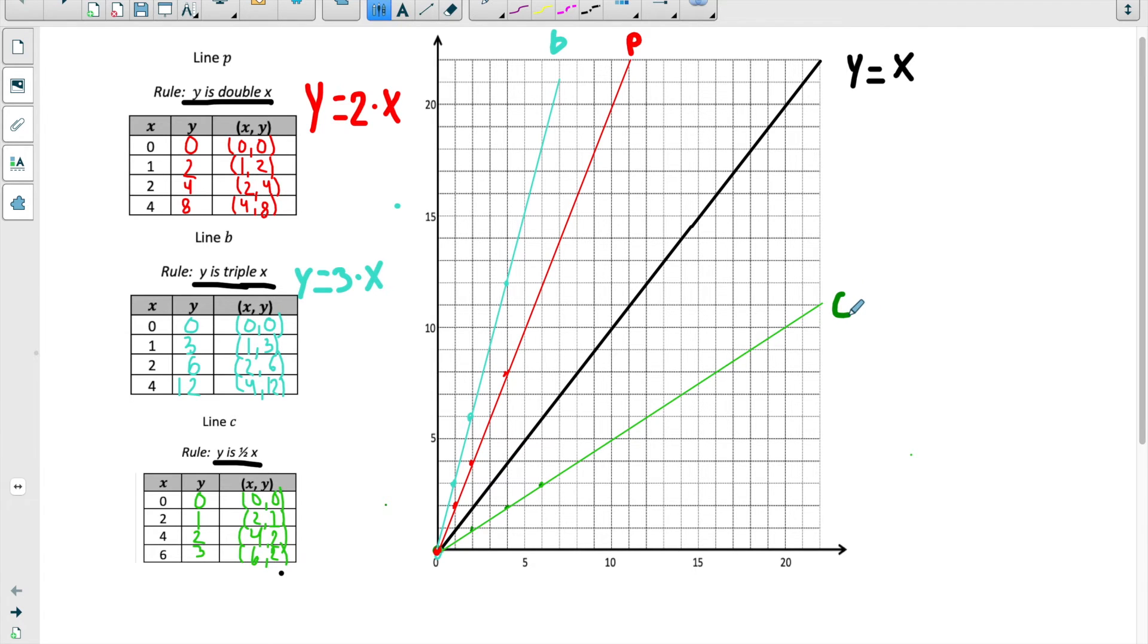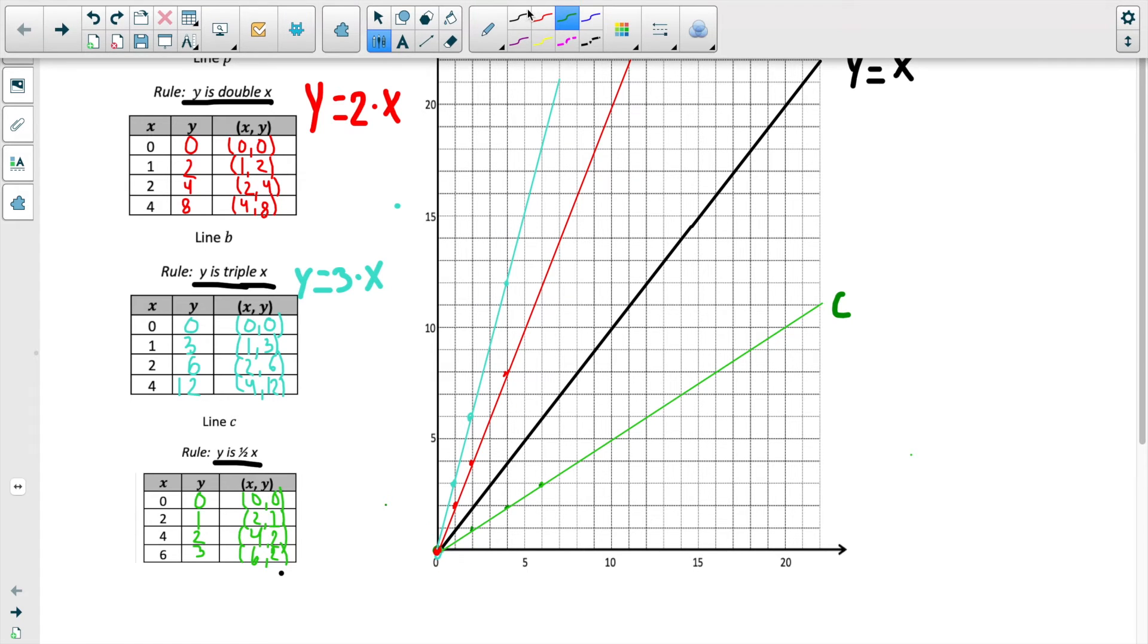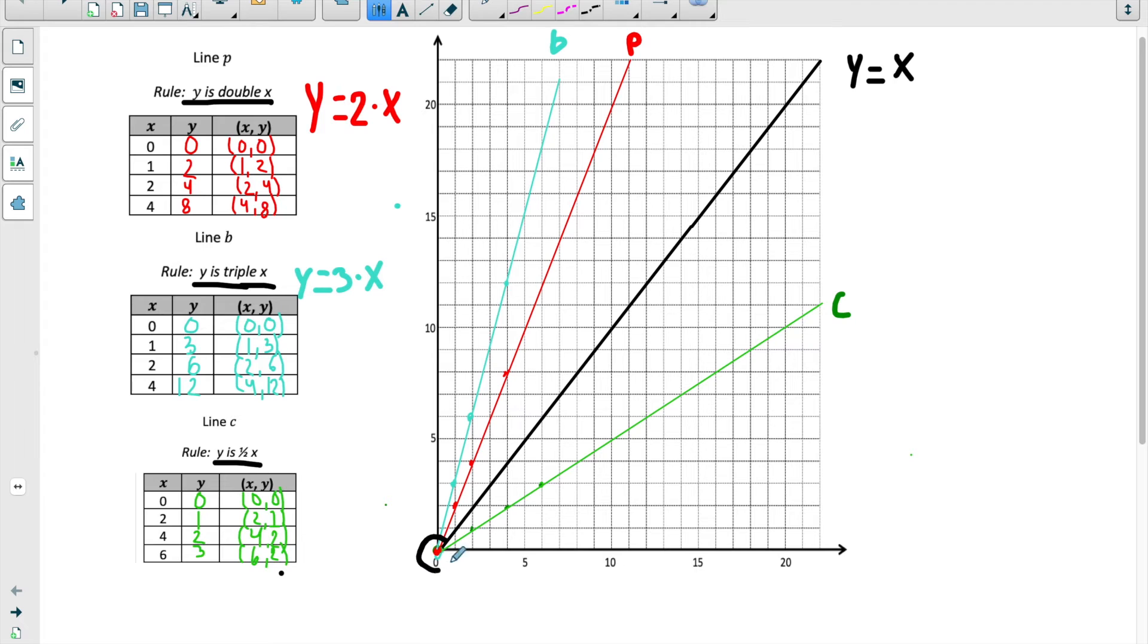As you might notice, c is less steep than lines b and p. You can notice that they all start at the origin, but then they move out from the origin at different rates. Stop and think also, are these lines parallel? Well, you know that they're definitely not parallel because they all intersect at the origin, and we know that parallel lines never intersect. They never touch. So this is how multiplication rules affect the lines on a coordinate grid.